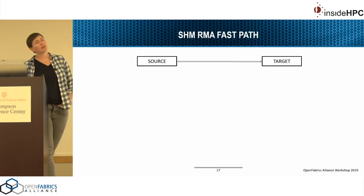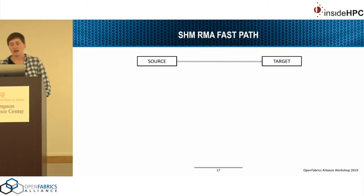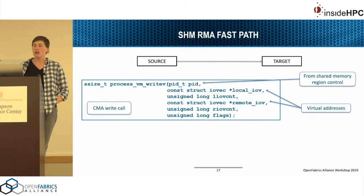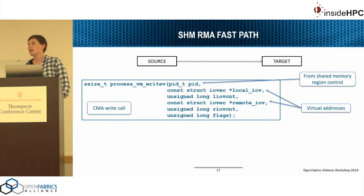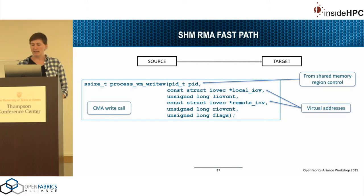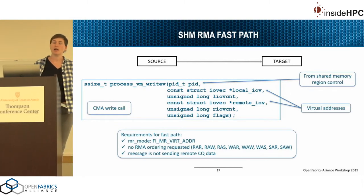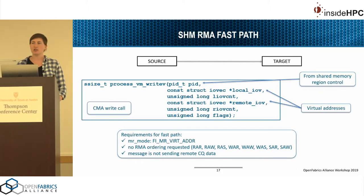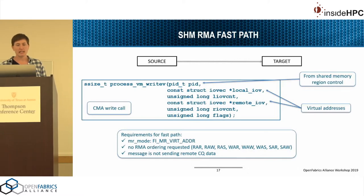There's also a fast path using CMA directly from source to target without going through the shared memory region. This is optional with a few limitations. The CMA write call requires the process ID from the shared memory region and virtual addresses. Limitations include needing the MR mode bit MR_VIRTUAL_ADDRESS so we have that virtual address and aren't using an offset. We also can't enforce RMA ordering — if the app requested read-after-read or read-after-write, we can't ensure that since some operations might be directly completed. And the message can't be a CQ data message because that has to go through the command queue to send extra information to the peer.